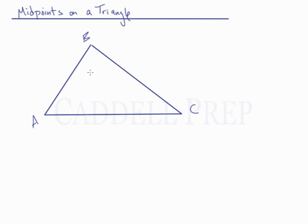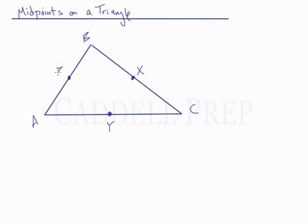Since they're line segments, we can find the midpoints of these line segments. Let's find the midpoint of line segment BC and call it X, the midpoint of line segment AC and call it Y, and the midpoint of line segment AB and call it Z.